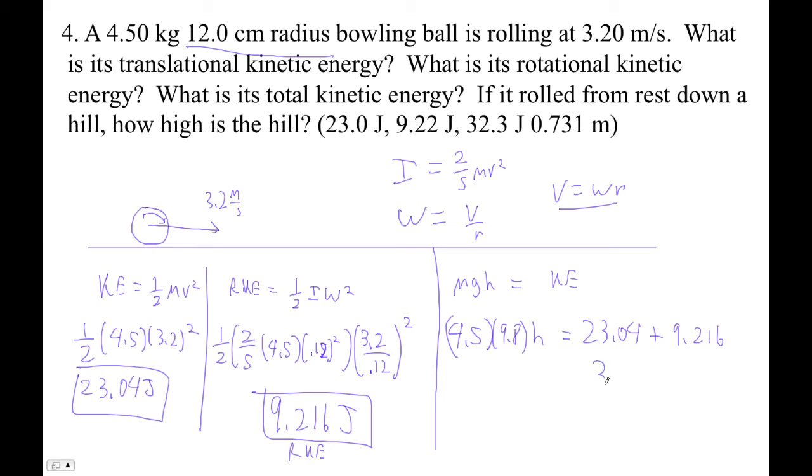And I've got 32.256 is 4.5 times 9.8 times H. So I'm going to divide by 4.5, divide by 9.8. And I get that the height of the hill is 0.7314 meters.